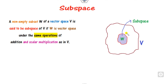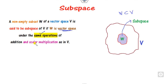What is a subspace? If you have a vector space V and consider a subset W of V, then W is said to be a subspace if it forms a vector space under the same operations of addition and scalar multiplication — that means it again satisfies all ten properties of V.